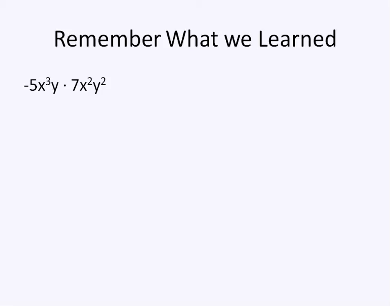First we need to do a quick review of multiplying monomials. This is a question from our previous lesson. Negative 5x to the power 3y times 7x squared y squared.